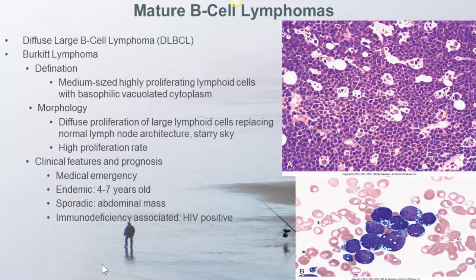Diffuse large B-cell lymphoma, DLBCL, is featured by diffuse proliferation of large lymphoid cells replacing normal lymph node architecture. The disease affects the elderly mostly, but is also seen in children and young adults. The disease is a localized disease involving a group of lymph nodes, but is aggressive because of its high proliferation rate.